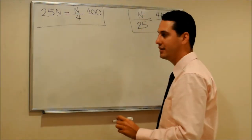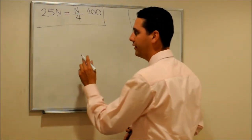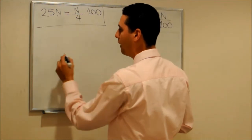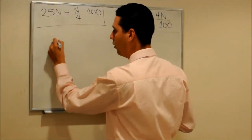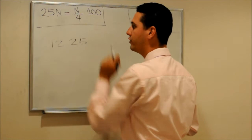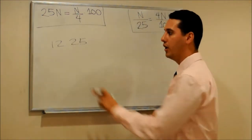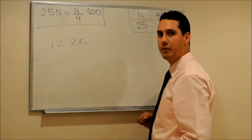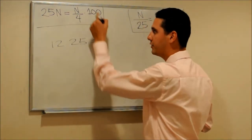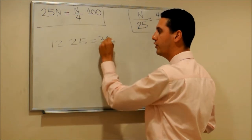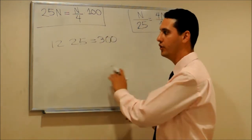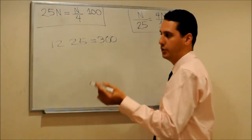For example, let's multiply 12 times 25. Following this rule: 12 divided by 4 — what is 12 divided by 4? It's 3. And what is 3 times 100? Just add two zeros to the 3. The answer is 300.